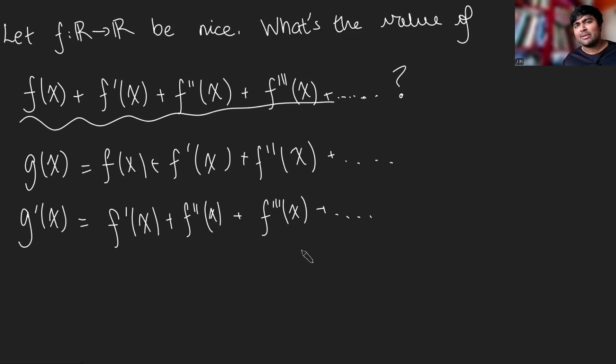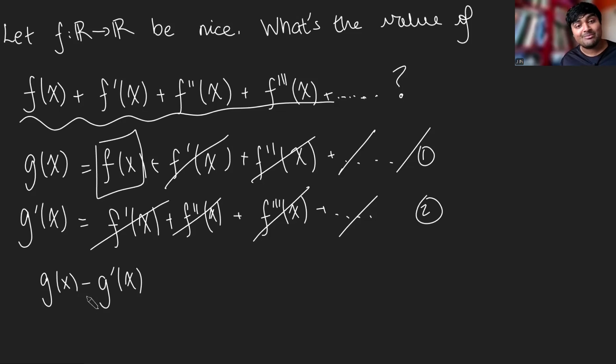Okay, cool. And now you can probably guess what I'm going to do. I'm going to subtract one from the other. So if I do g(x) - g'(x), I'm doing this top equation minus equation two. And if I do that, the f primes will cancel out. The f double primes will cancel out. There'll be an f triple prime here that will cancel out with that guy. In fact, all these terms here will cancel out, and all I'm left with is f(x). So g(x) - g'(x) is f(x).